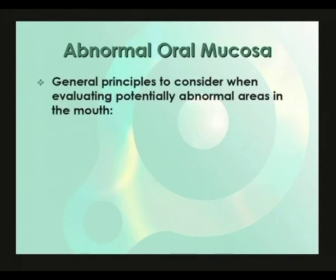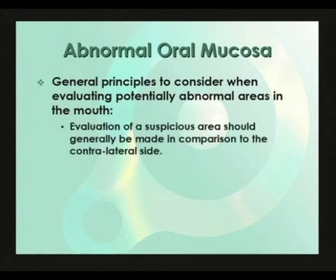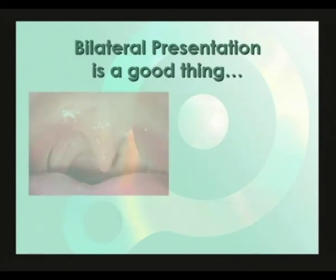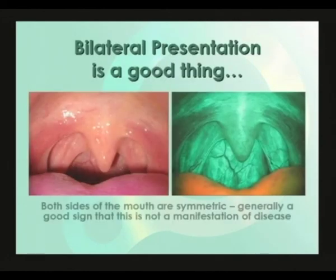As we move on to considering genuinely abnormal mucosa, we should remind ourselves of some general principles. Evaluation of a suspicious area should generally be made in comparison to the contralateral side. Areas that show an irregularly shaped but relatively well-delineated reduction of normal green fluorescence compared to surrounding tissue of the same type and to the equivalent location on the contralateral side should be watched carefully.